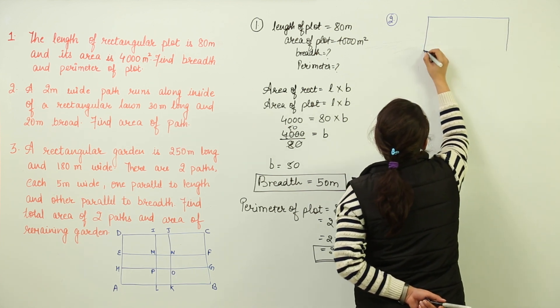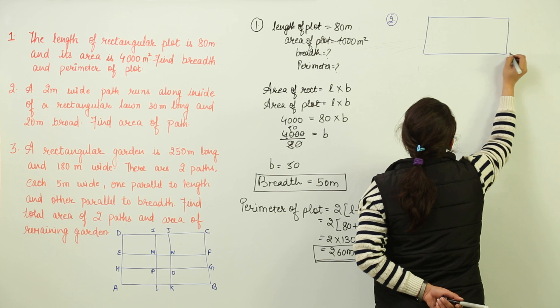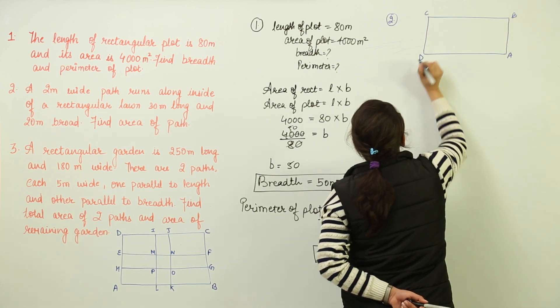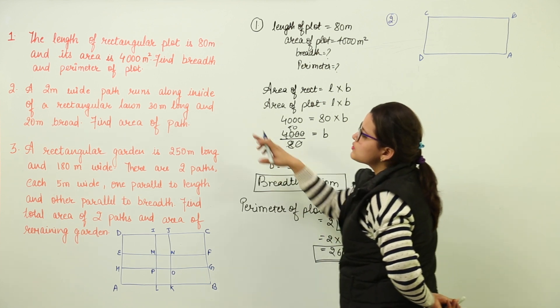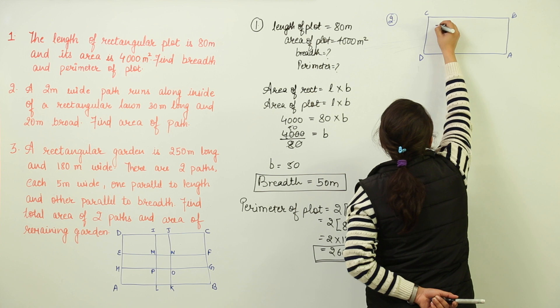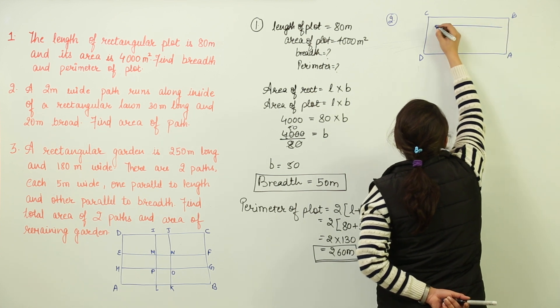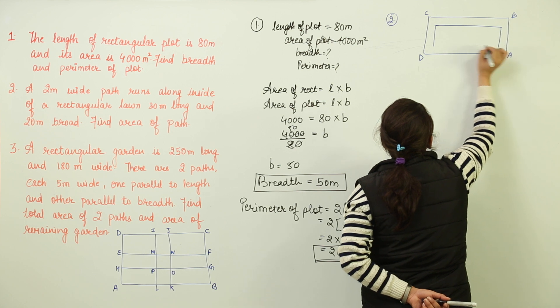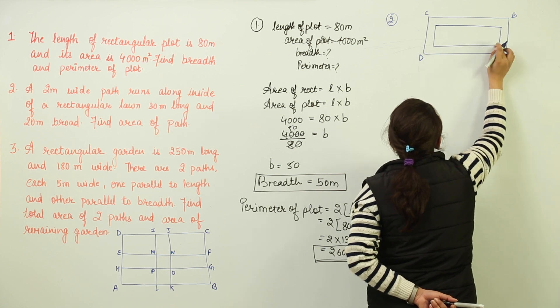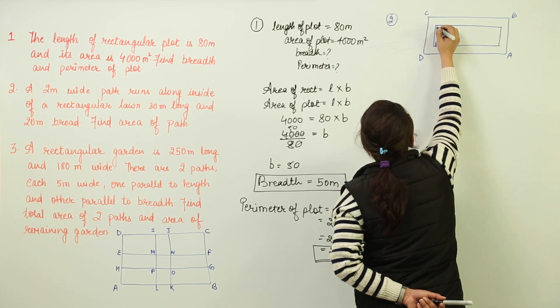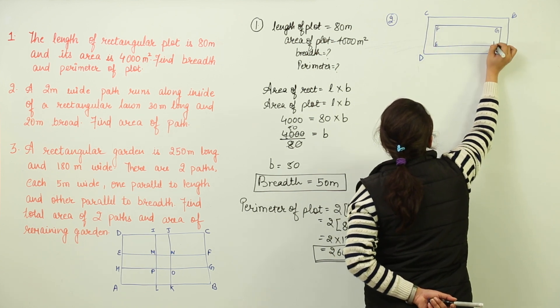So question number 2 is having the shape of a rectangular lawn. That is a rectangle. At first, you make a rectangle. Let's name it A, B, C and D. Now you have a 2 meters wide path running across it. That means inside you have drawn a 2 meters wide path across its length and across its breadth both. So I have constructed that path and let us name this as E, F, G, H.